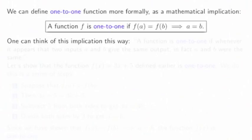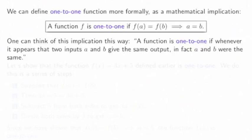One can think of this implication this way: a function is one-to-one if whenever it appears that two inputs a and b gave the same output, in fact a and b were the same.